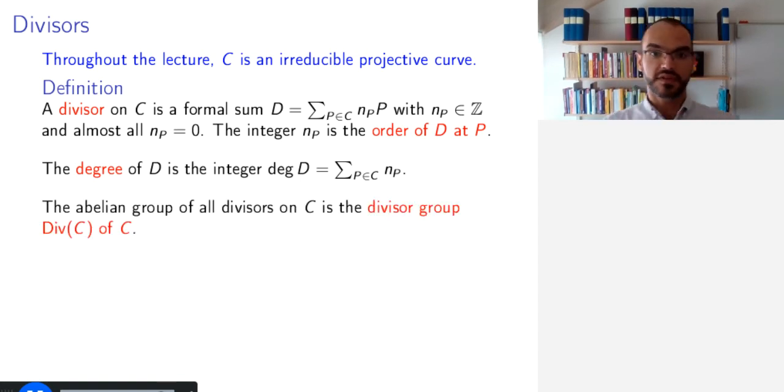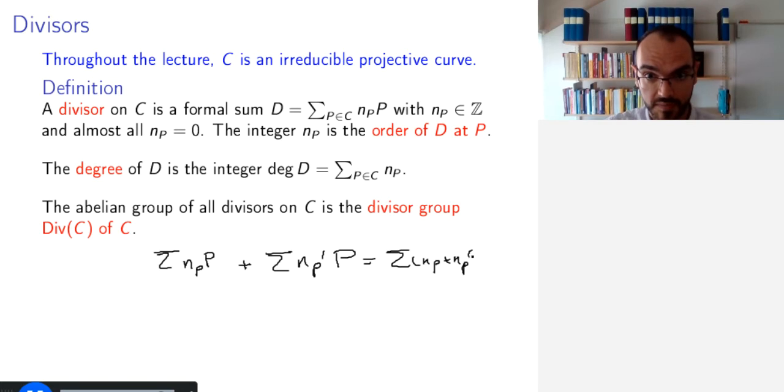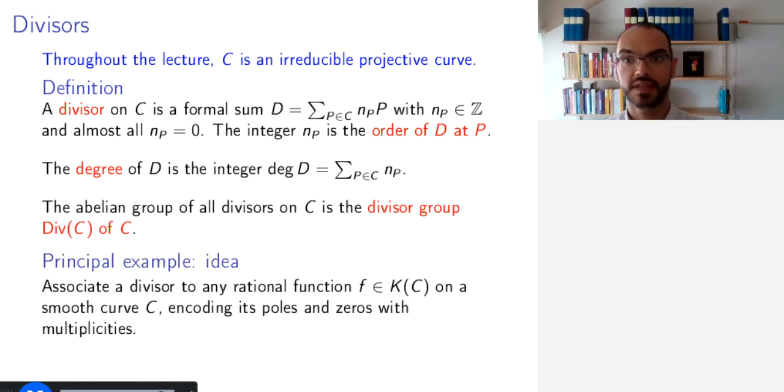And so these divisors form an abelian group. The addition is simply that you take the sum of NP P plus the sum of NP prime P equals the sum of NP plus NP prime P. And 0 is simply the sum of 0P. So this is the abelian group of all divisors on C. It is clearly abelian because the addition is based on addition of integers.